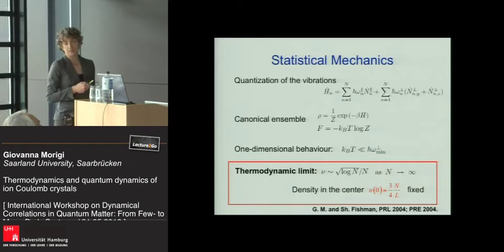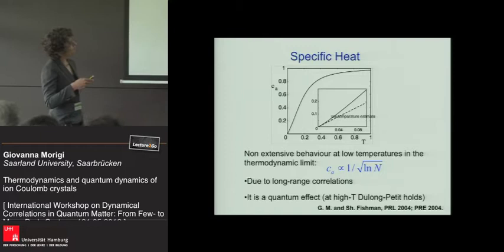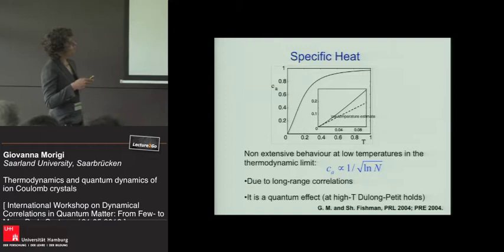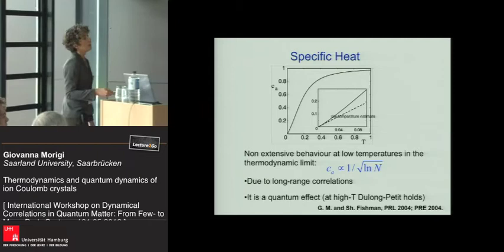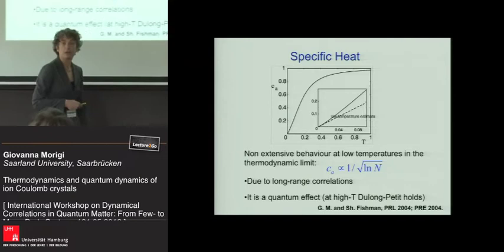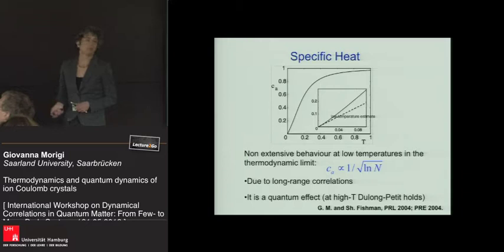If you look at the statistical mechanical properties of the chain in the thermodynamic limit where only axial excitations are relevant, the specific heat is that of a Debye crystal: the Dulong-Petit law at high temperature, and going to zero at low temperature. But the specific heat is not independent of the number of particles—it scales as 1 over the square root of the logarithm of N. This non-extensive behavior is due to the long-range Coulomb interaction, and it appears only in the quantum mechanical regime; in the classical regime it is absent.